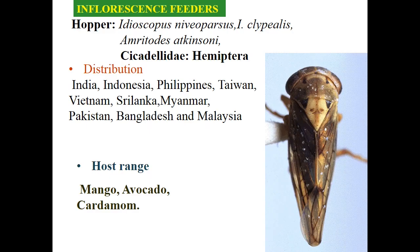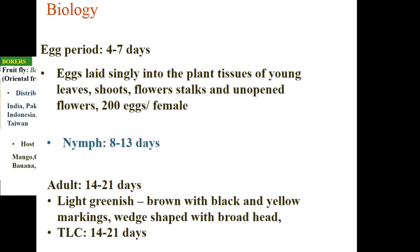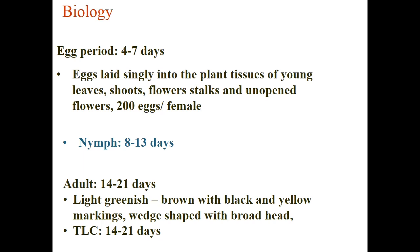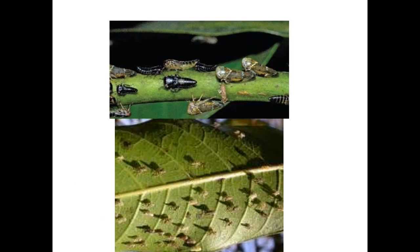Biology of hoppers: egg period is 4–7 days; eggs are laid singly into plant tissue of young leaves, shoots, flower stalks, and unopened flowers, with around 200 eggs per female. Nymph stage is 8–13 days. Adult stage is about 3 weeks; the adult is greenish to brown with black and yellow markings, wedge-shaped with a broad head. Total life cycle is about 3 weeks. Different hopper stages can be seen on the underside of leaves.